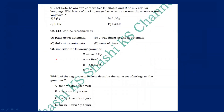Let L1 and L2 be any two context-free languages and R1 be any regular language. Which of the following is not necessarily a context-free language? The concatenation of L1 and L2 is context-free; the union of L1 and L2 is context-free. The intersection L1 ∩ L2 is not necessarily context-free — so option B is the answer. Next: a context-sensitive grammar (CSG) can be recognized by a two-way linear bounded automaton — option B is the right answer.